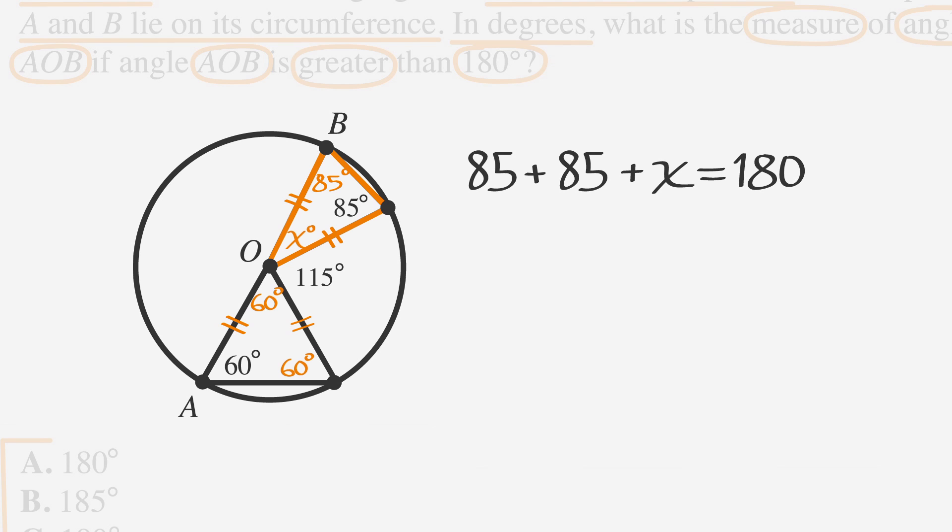Adding 85 and 85 together, we get 170 + X = 180. If we subtract 170 from both sides, we find the missing angle measures 10 degrees. So let's add that to the drawing.